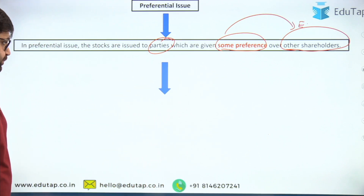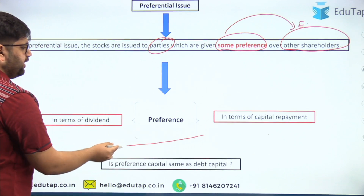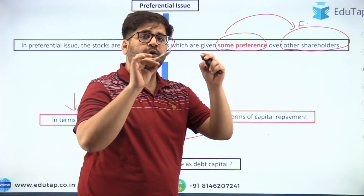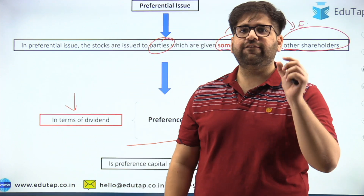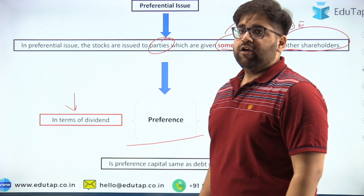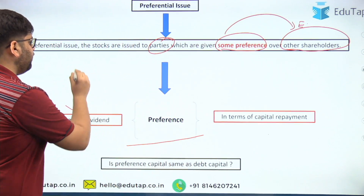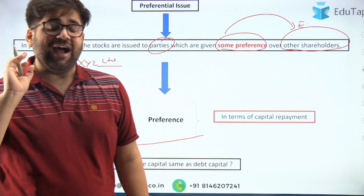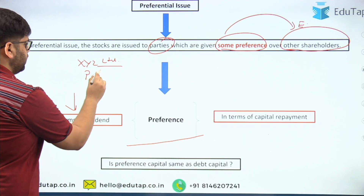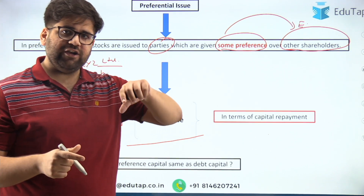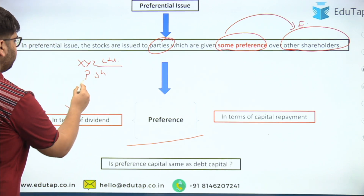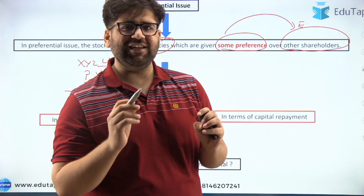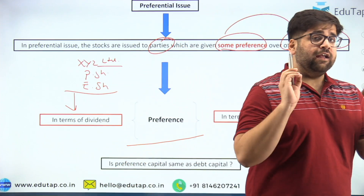Preference can be given in two types. The first is dividend. Under preference shares, dividend is paid first. For example, if company XYZ Limited issues a dividend, the first dividend will be paid to preference shareholders. After deducting the preference shareholder's dividend, whatever amount is left will be paid to equity shareholders. Preference in terms of dividend to preference shareholders is a key concept.